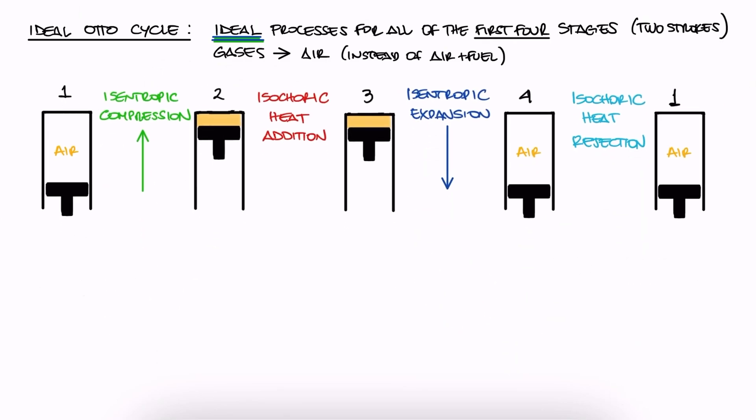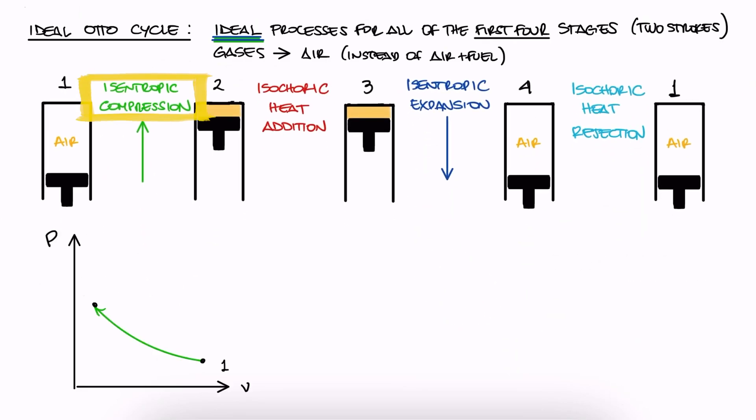On a PV diagram, we would see the isentropic compression from 1 to 2, heat addition at constant volume from 2 to 3, the isentropic expansion from 3 to 4, and then heat rejection at constant volume from 4 to 1.